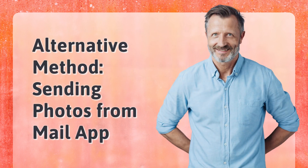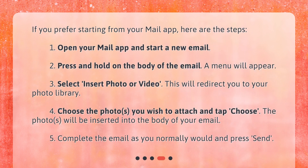Alternative method: Sending photos from the Mail app. If you prefer starting from your mail app, here are the steps. Open your mail app and start a new email. Press and hold on the body of the email — a menu will appear. Select Insert Photo or Video, which will redirect you to your photo library. Choose the photos you wish to attach and tap Choose — the photos will be inserted into the body of your email. Complete the email as you normally would and press Send.